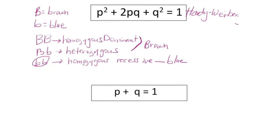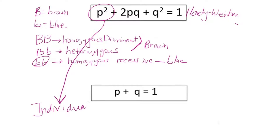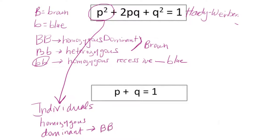Now let's compare this eye color example to the Hardy-Weinberg equation. There are several variables in the equation we need to understand. The first variable, p², is very important — it represents the individuals in a population that are homozygous dominant. So in our example, p² represents the number of individuals with the genotype big B, big B.